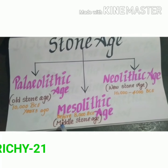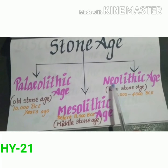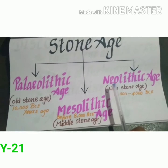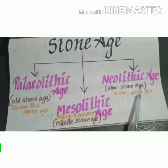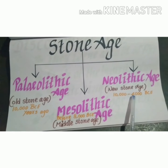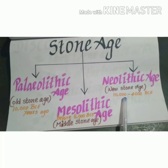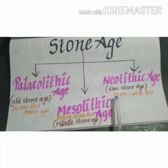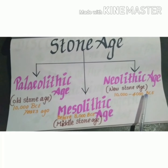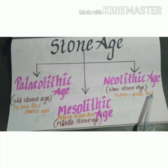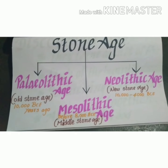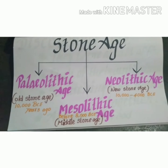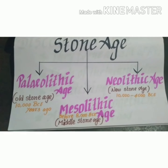The Neolithic Age, or New Stone Age, spans from 10,000 to 4,000 B.C.E. B.C.E. means Before Christ or Before Common Era. Nowadays we are in the A.D. period. A.D. means Anno Domini, that means Common Era.